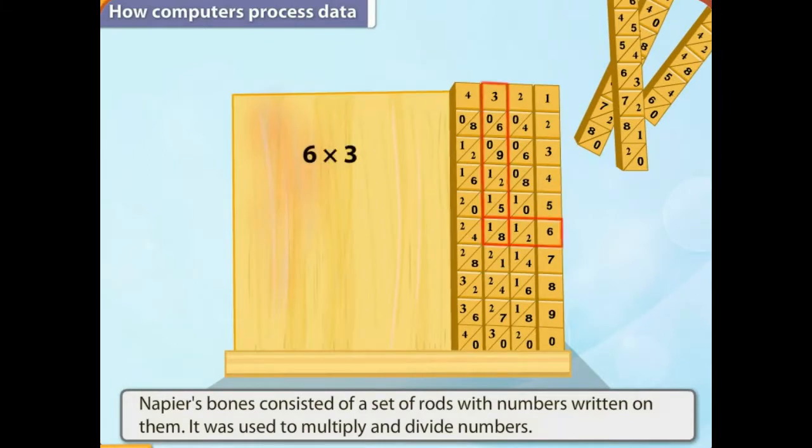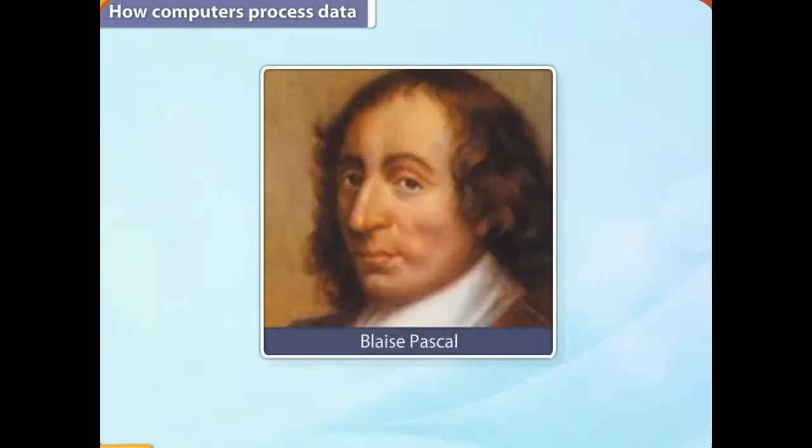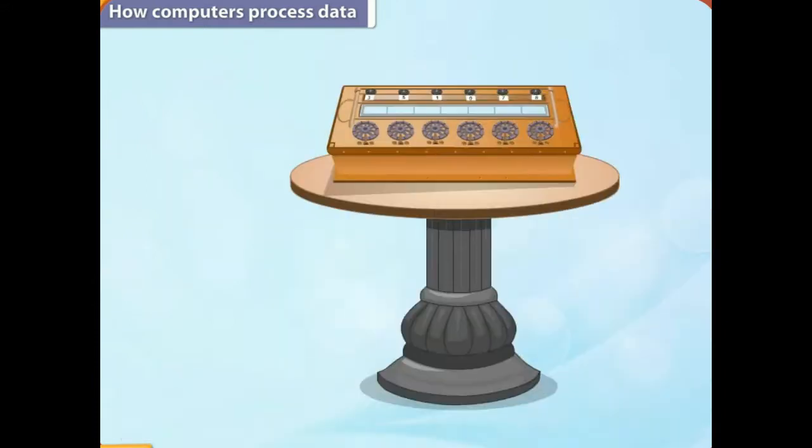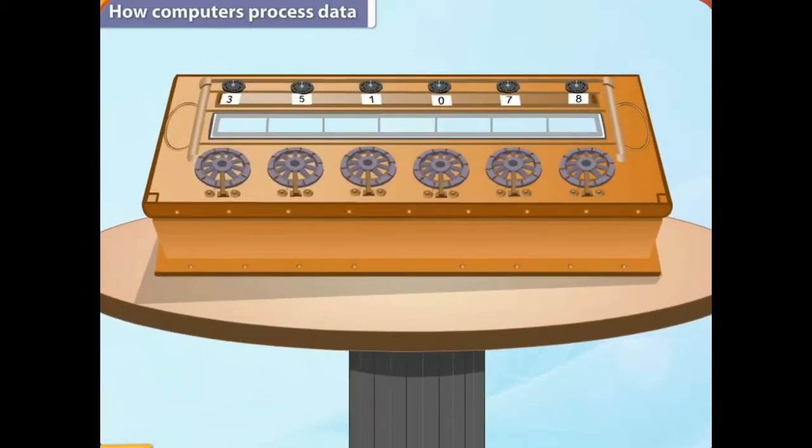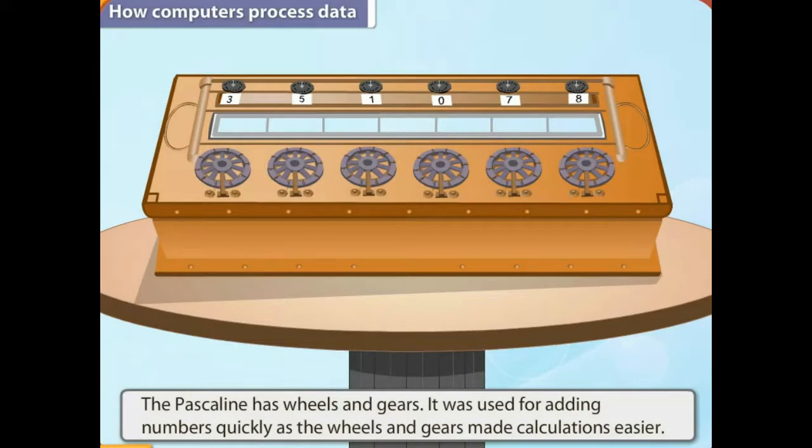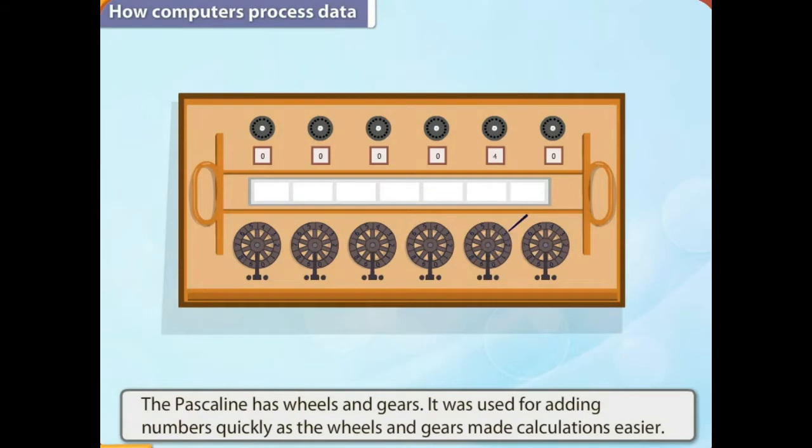The Pascaline: In 1642, the Pascaline was invented by a French mathematician called Blaise Pascal. The Pascaline was the first mechanical calculator in the world. The Pascaline has wheels and gears. It was used for adding numbers quickly as the wheels and gears made calculations easier.